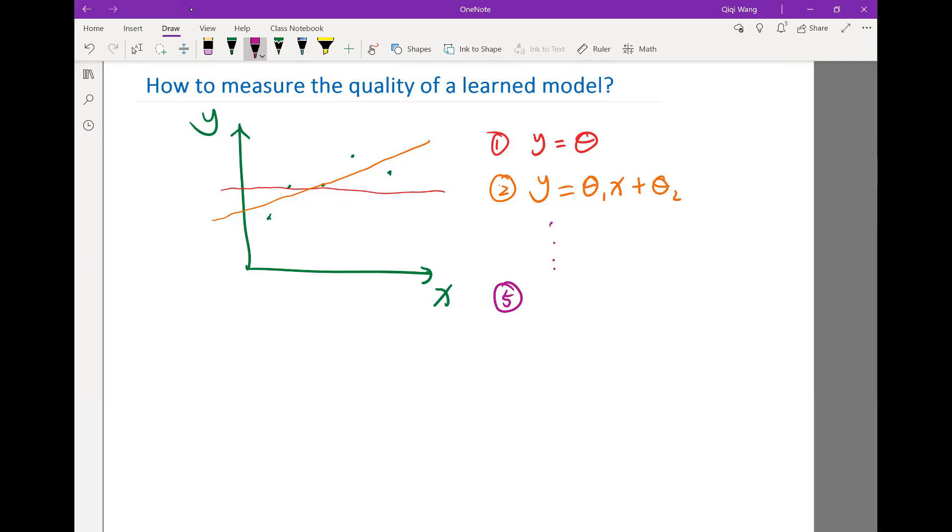So if we go to a fourth-order polynomial, so let's say the fifth model, a fourth-order polynomial, that can actually fit the five points exactly. Okay, so a fourth-order polynomial probably can look something like this. So Y would be equal to theta_1 X to the fourth, plus theta_2 X third, plus theta_3 X square, etc. So we have a fifth-order polynomial that fits the five points exactly. Is that going to be a better model?